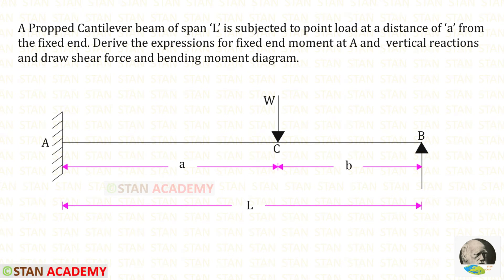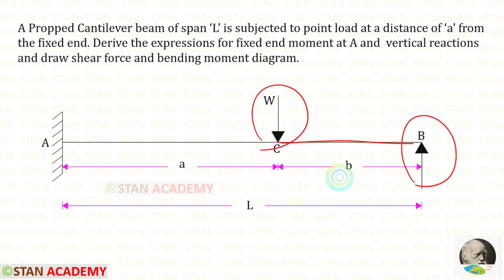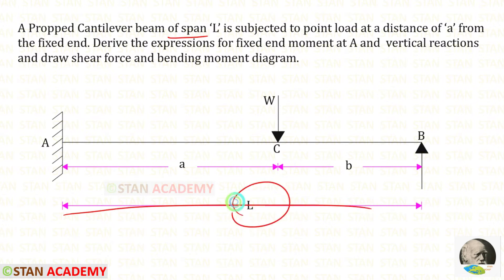Hello everyone. Today we are going to analyze this beam using the strain energy method. In this propped cantilever beam there is an eccentric point load W acting at a distance A from the fixed end. Let us keep the distance between the point load and the propped end as B. The span of the beam is given as L.